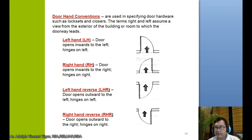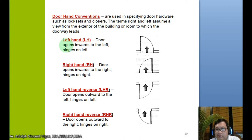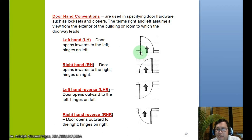Door hand conventions are used in specifying door hardware such as lock sets and closers. The terms right and left assume a view from the exterior of the building or room to which the doorway leads. A left-hand door opens inward to the left and hinges on the left. A right-hand door opens inward to the right and hinges on the right.